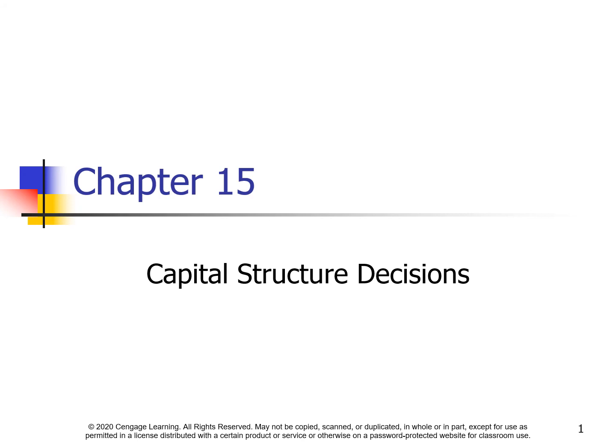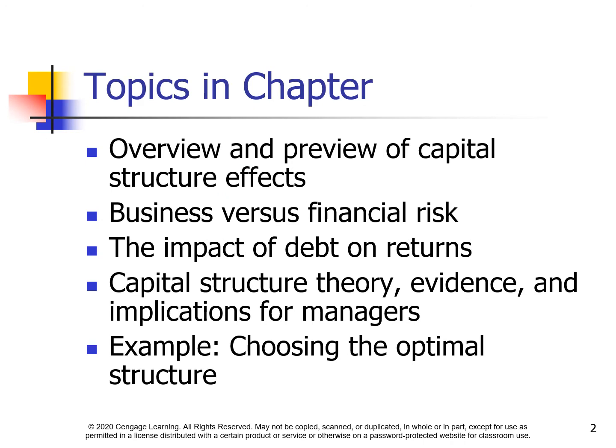Chapter 15: Capital Structure Decisions. The topics in this chapter include an overview and preview of capital structure effects, business versus financial risk, the impact of debt on returns, capital structure theory, evidence, and implications for managers — including an example of choosing the optimal capital structure.